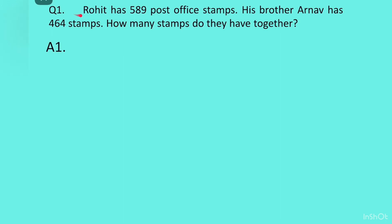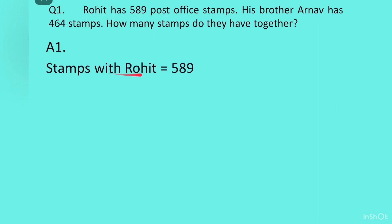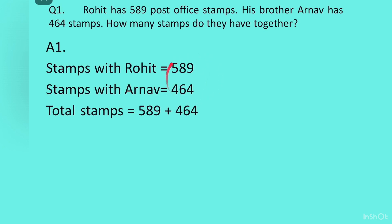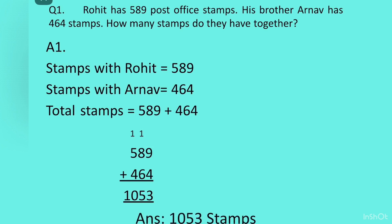The first question was: Rohit has 589 post office stamps. His brother Arnav has 464 stamps. How many stamps do they have together? So the first information gives us: stamps with Rohit is equal to 589. Then the second information: stamps with Arnav is equal to 464. We have to find total stamps, which equals the sum of both. Writing them one below the other and adding gives the answer 1053. Answer: 1053 stamps.